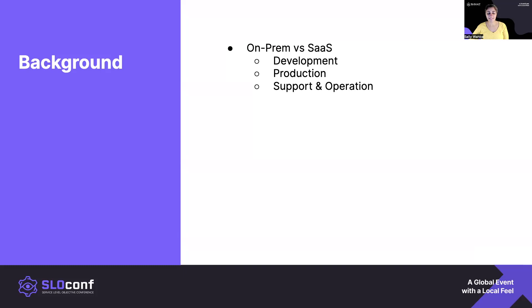A little bit of background about myself. I've always been in a software engineer and developer capacity — never QA, SRE, or DevOps. For close to a decade, I worked for a data storage company where our main product was an operating system for data storage, and it mostly ran on-prem. Currently at Splunk, I work for Splunk Observability Cloud, which is a SaaS offering. I'm going to talk a little bit about on-prem versus SaaS for development, production, support, and operation portions of the product lifecycle.